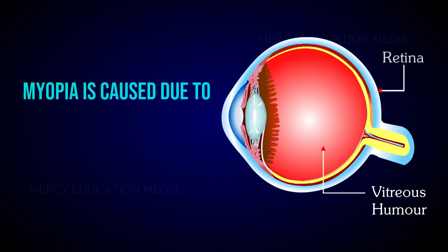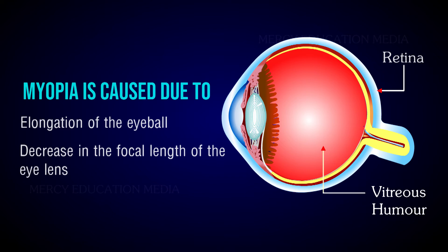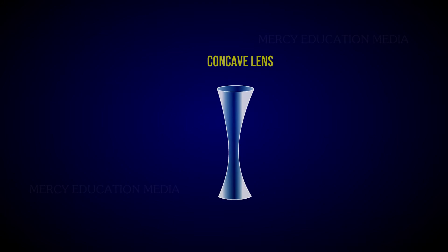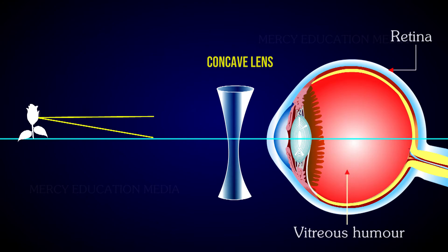Myopia is caused due to elongation of the eyeball or decrease in the focal length of the eye lens. A concave lens is used to rectify this optic abnormality. The ray diagram shows how a concave lens helps in focusing the light on the retina.